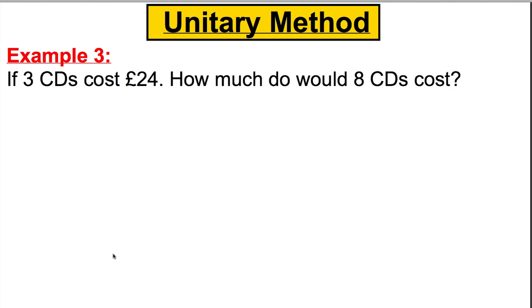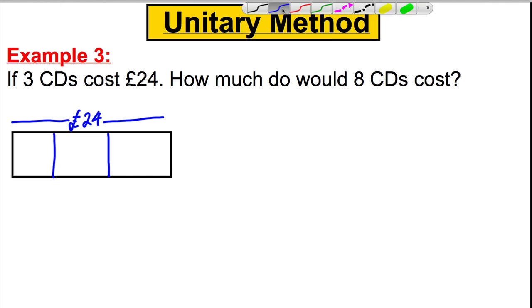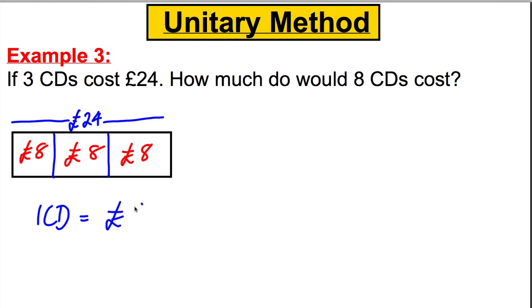And the last example, 3 CDs cost £24, how much would 8 cost? Let's draw ourselves a little picture. Here's our 3 CDs. In total, they're £24, got three of them, 1, 2, 3, what must go in each box? Well, £8, because then we'd have 8, 16, 24, and therefore we know that 1 CD costs £8.